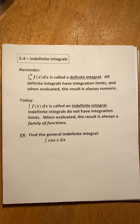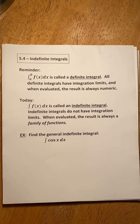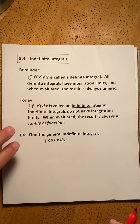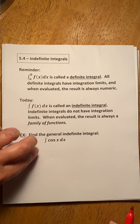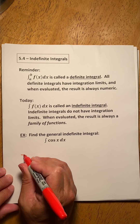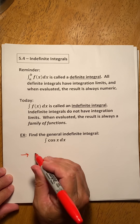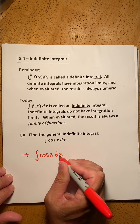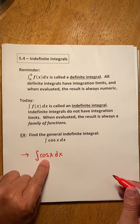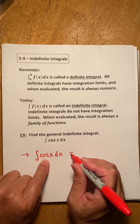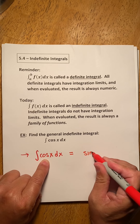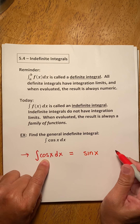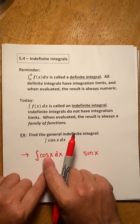So let's find the general indefinite integral of the cosine. When we're doing indefinite integrals, it's not much different than doing definite integrals, because the first step is to find a function whose derivative is the integrand. In this case, we know that the derivative of the sine is the cosine — we take the derivative of the sine and we get the cosine.